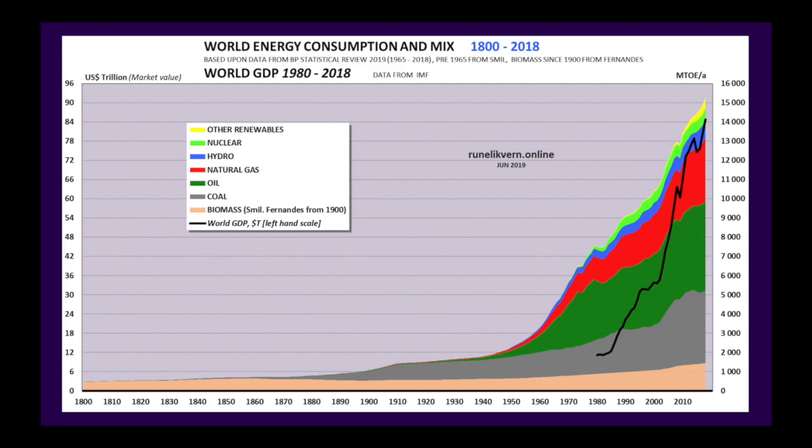This is a chart of global energy use the last 200 years. Up until the end of the 20th century, you can see the beige on the bottom, which is biomass, comprised most of the energy that humans use. Then we started to use coal in the gray stripe, oil in the green, natural gas in the red, hydroelectric in the blue, nuclear in the green, followed by other renewables like solar and wind in the yellow. You can see that we added these new energy sources on top of what we used before to grow the size and the scale of the human economy.